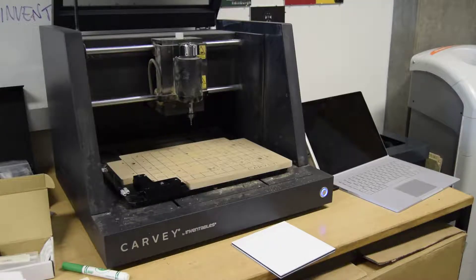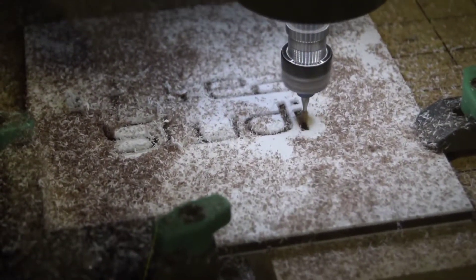The Carvi CNC milling machine is a subtractive manufacturing process, which takes a block of material and removes the excess, leaving your design.